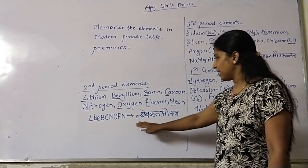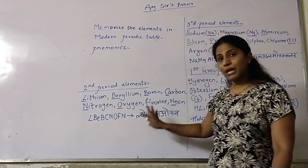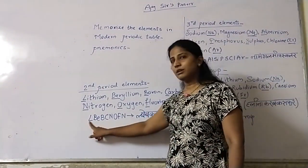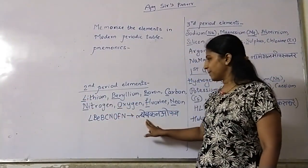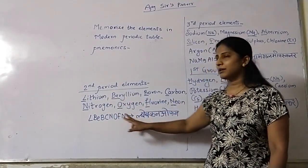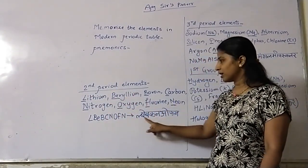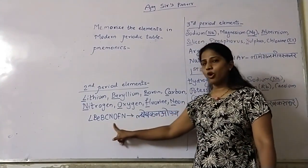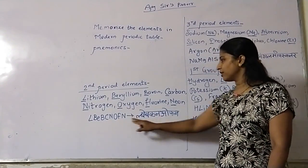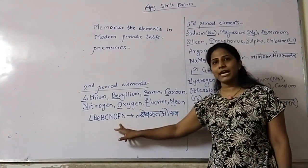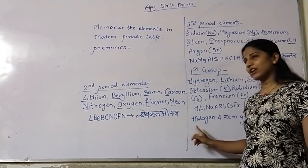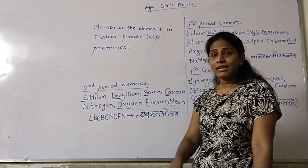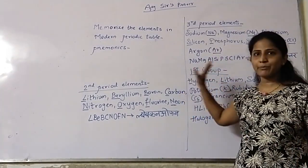Now let us map the mnemonic back to the elements. L → Lithium, B → Beryllium, B → Boron, K → Carbon, N → Nitrogen, O → Oxygen, F → Fluorine (symbol F), N → Neon. So 'Blade Bakan Open' gives us all eight second period elements along with their symbols.